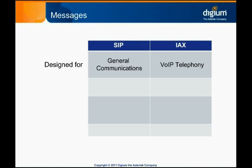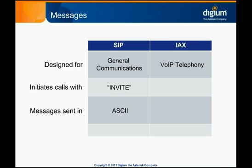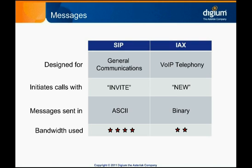EECS messages are somewhat more compact than SIP messages. In SIP, an invite message is sent to initiate a call, and the word invite is spelled out in ASCII characters. In EECS, the corresponding message to initiate a call is the new message, but instead of spelling out the word new in ASCII, EECS represents it in binary encoding. This saves a little bandwidth and makes it easier to write an independent EECS implementation, though it can make it harder for a human to decode EECS frames in a packet capture. Luckily, there are networking tools that are EECS-aware and can interpret the binary coding of EECS messages for you.